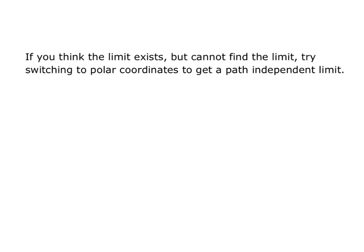So if you think the limit exists but cannot find the limit, try switching to polar coordinates to get a path-independent limit. Remember in the last video we saw that you could try to use a two-path approach to show that a limit does not exist, but what if you can't prove that it exists another way but you think that it actually does? Then our two-path approach won't help us, so what we can try is switching to polar.